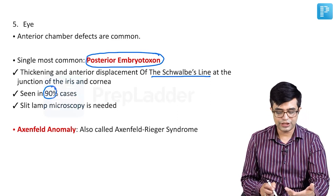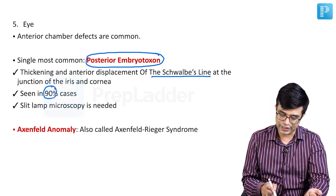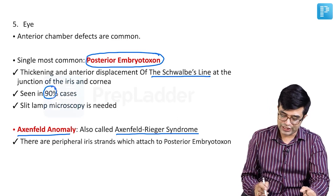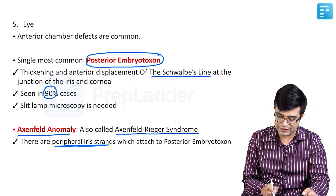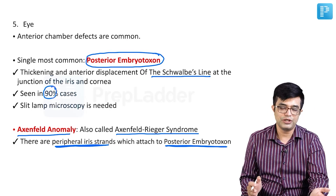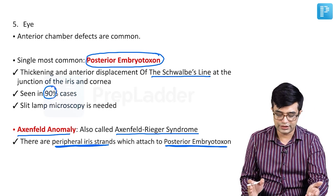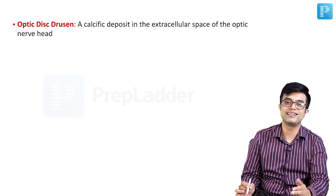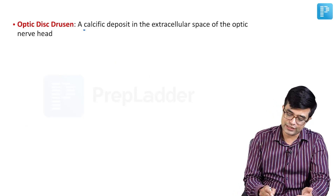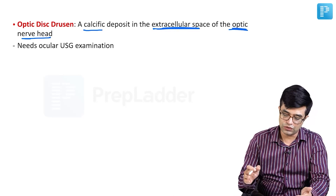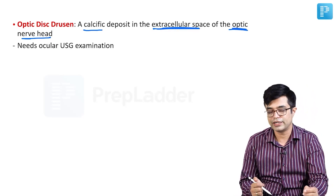Another anomaly associated with posterior embryotoxon is Axenfeld anomaly, also called Axenfeld-Rieger syndrome. In these patients, there are peripheral iris strands attached to the posterior embryotoxon, again requiring slit lamp microscopy to visualize. A third finding is optic nerve drusen, or optic disc drusen — a calcified deposit in the extracellular space around the optic nerve head, identified by ocular ultrasound examination.